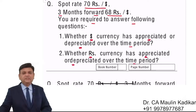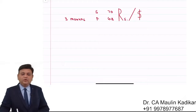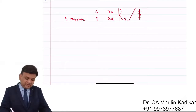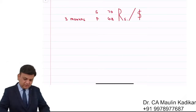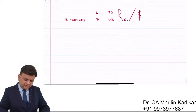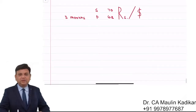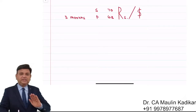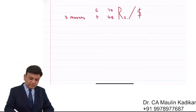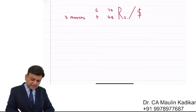I requested to answer this question in the chat box. Spot exchange rate is 70 rupees per dollar and forward exchange rate is 68 rupees per dollar. For the same dollar, we will get less rupees per dollar.